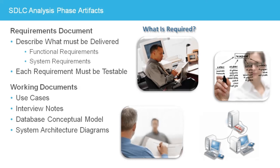A high-level conceptual model of the database is often constructed, showing entities and the relationships between them. These entity relationship diagrams help understand the data items that will be used and stored by the final system. The conceptual entity relationship model will be fleshed out into a logical model, adding details like attributes, identifiers, and cardinalities, as everyone comes to agreement on the entities and their relationships.